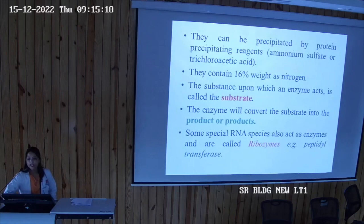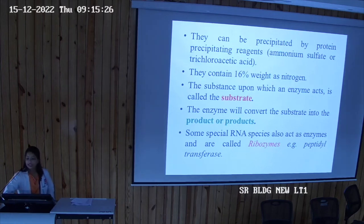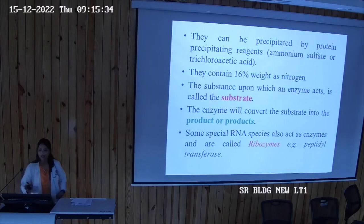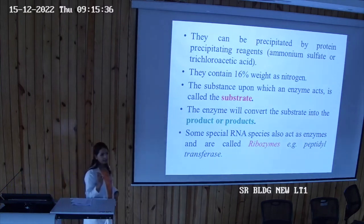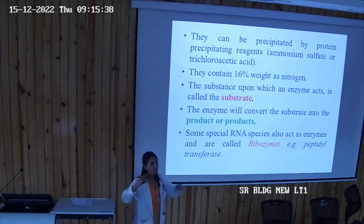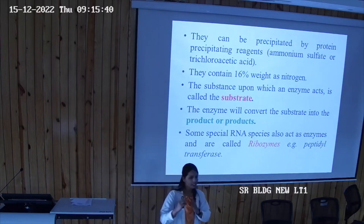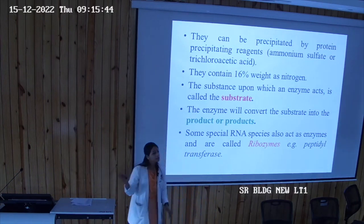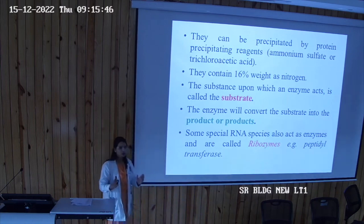Enzymes can be precipitated by protein-precipitating reagents such as ammonium sulfate or trichloroacetic acid. They contain 16% nitrogen by weight. The substance upon which an enzyme acts is called the substrate. At the active site, the enzyme-substrate complex forms, and then product is produced.